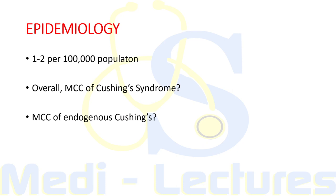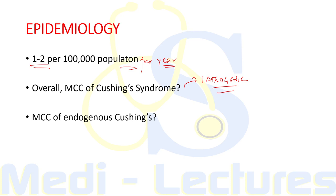Cushing syndrome is considered a rare disease with an incidence of 1 to 2 per 100,000 population per year. When considering the overall most common cause, it is iatrogenic — that is, exogenous Cushing syndrome due to therapeutic use of glucocorticoids for immunosuppression.